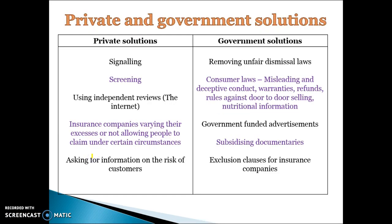These are some examples of private solutions and government solutions. Signalling and screening, which we'll talk about soon, is related to hiring new applicants. Independent reviews — the internet itself prevents asymmetric information because you're able to look up the quality of products. You can source independent reviews from things like Trivago and the RACV. eBay, for example, has where you rate each client and can make comments about the quality of the product, so that stops you from buying from dodgy suppliers because they get a bad rating.